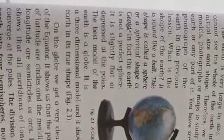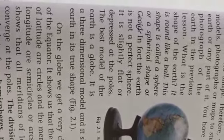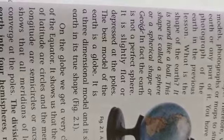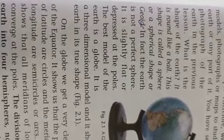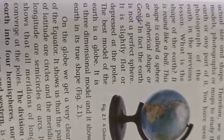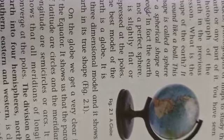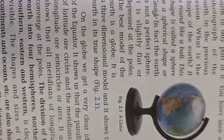In fact, the earth is not a perfect sphere. It is slightly flat or depressed at the poles and the best model of the earth is a globe. If we want to represent the earth's surface then we use globe because it is a three dimensional 3D model and it shows the earth in its true, accurate shape.